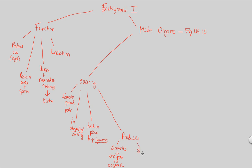In addition to producing gametes, the ovary also produces sex hormones — just like the testes produce testosterone in males. Here the sex hormone is called estradiol. Students sometimes say estrogen, but specifically estrogen is just a broad class of hormones; the specific estrogen produced by the ovary is estradiol. In addition, progesterone is another sex hormone produced by the ovary, which will be very important in pregnancy and maintaining pregnancy as we move forward.